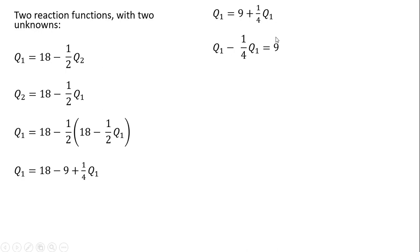Subtracting 1 fourth Q subscript 1 from both sides. Simplifying the left hand side, 1 minus 1 fourth is just 3 fourths. And then multiplying everything through by 4 thirds or 4 divided by 3. And the output for firm 1 will be 12 units.